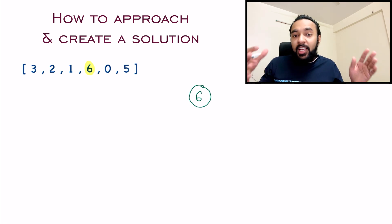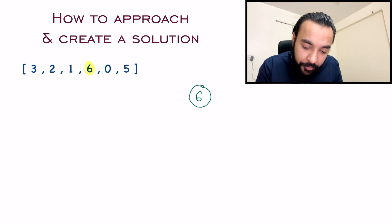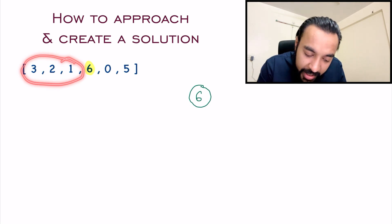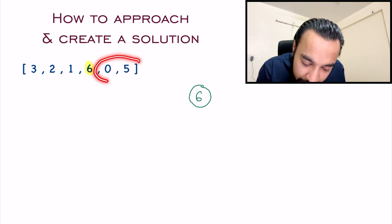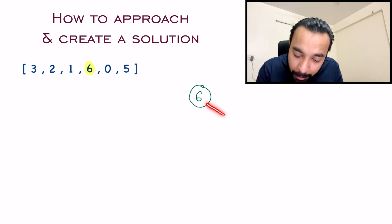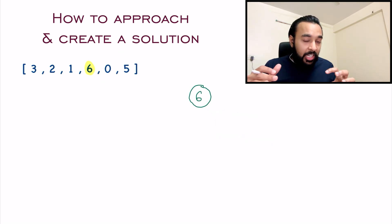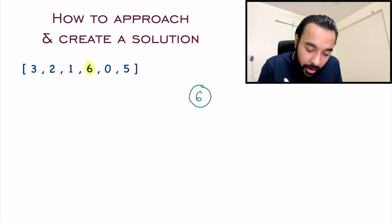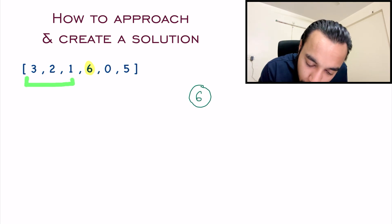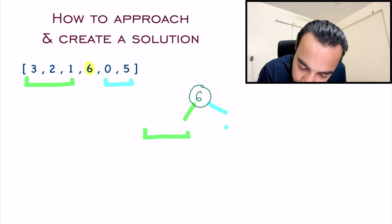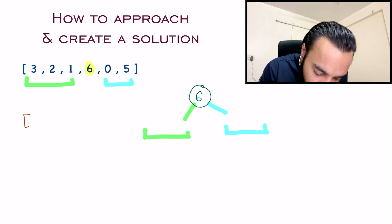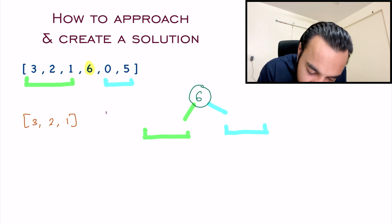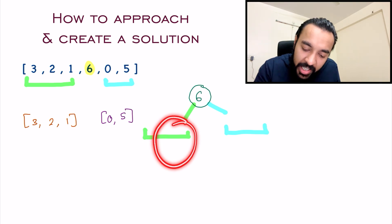Now comes the tricky part — you have to find the trees for the left child and the right child as well. All elements to the left of six will be part of the left child, and all elements in the right sub-array will be part of the right child. In a way, you have just divided your problem into two different parts. You now get two new sub-problems: one is 3, 2, 1 and the other is 0, 5.